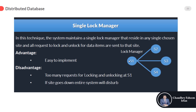For example, suppose site 1 is the lock manager site and site 2 wants to lock a data atom at site 3. Site 2 will send a request to site 1 to lock the data atom of site 3, and then site 1 performs the lock. Too many such requests may damage the performance of site 1, and if site 1 goes down, the entire system is affected.